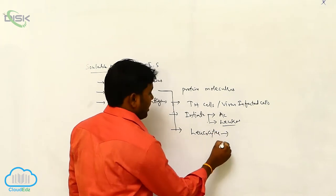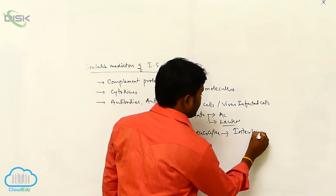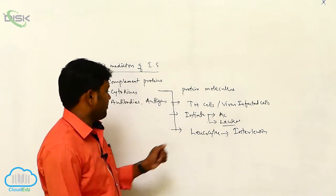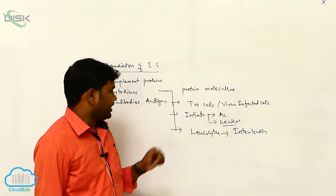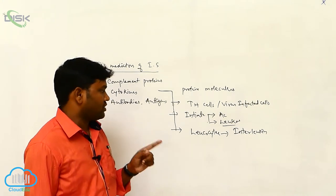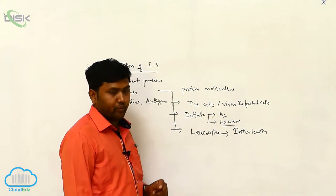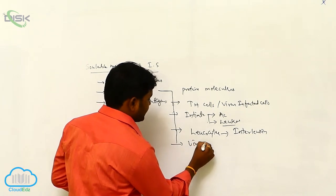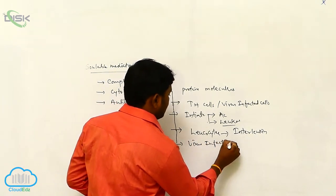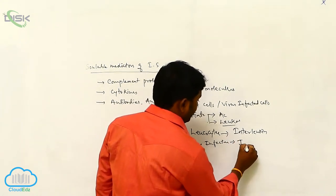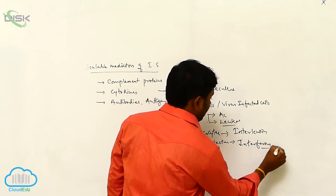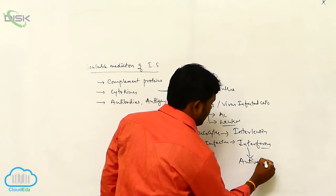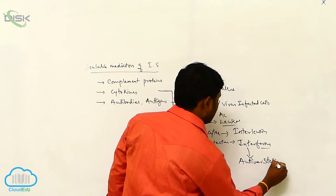When cytokines are secreted by the leukocytes, they are called interleukins, which are responsible for the differentiation of the cells of the immune system. If the cytokines are secreted by virus-infected cells, they are called interferons, which induce the antiviral state of other cells.